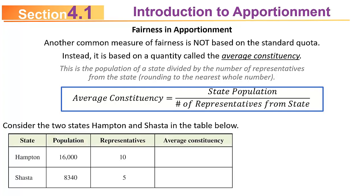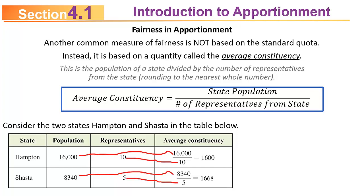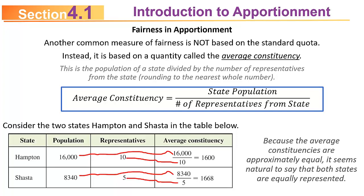Consider two states, Hampton and Shasta. Hampton has a population of 16,000 with 10 representatives, giving an average constituency of 1,600. Shasta has a population of 8,340 with 5 representatives, giving an average constituency of 1,668. Hampton has a slightly smaller average constituency than Shasta, meaning a representative in Hampton represents slightly fewer people. Because they're so close, you'd think they're pretty well equally represented.